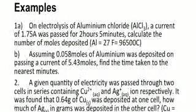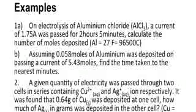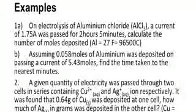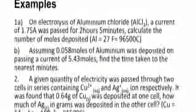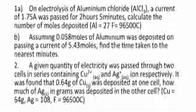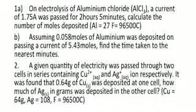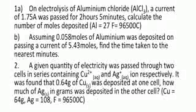Question 1: On electrolysis of aluminium chloride, a current of 1.75 amperes was passed through for two hours and five minutes. (a) Calculate the number of moles deposited, where aluminium has atomic mass of 27 and the Faraday constant is 96,500 coulombs. (b) Assuming 0.058 moles of aluminium was deposited on passing a current of 5.43 amperes, find the time taken to the nearest minute. Question 2: A quantity of electricity was passed through two cells in series containing Cu²⁺ and Ag⁺ ions respectively. It was found that 0.64 grams of copper was deposited at one cell. How much silver in grams was deposited in the other cell? Cu = 64 g/mol, Ag = 108 g/mol, Faraday constant = 96,500 coulombs.